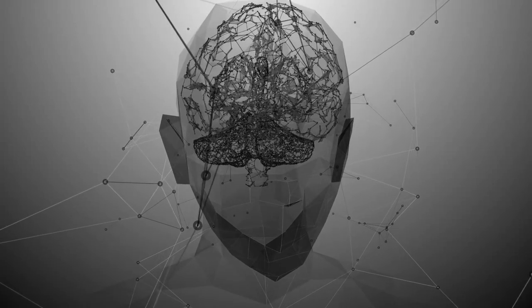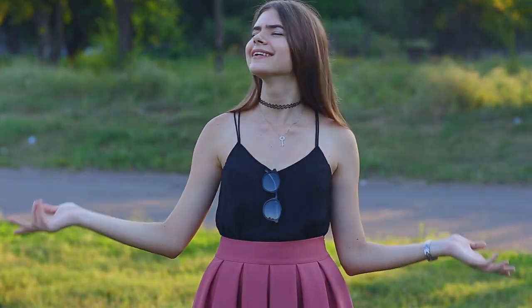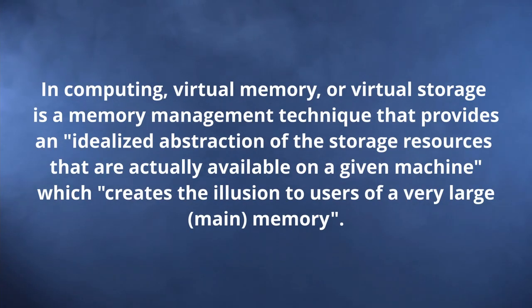Virtual memory is a term bandied around that everyone expects you to know. The best definition I've seen, which is still absolutely awful, is on Wikipedia. It says, "In computing, virtual memory, or virtual storage, is a memory management technique that provides an idealized abstraction of the storage resources that are actually available on a given machine, which creates the illusion to users of a very large main memory." And I know what you're thinking. What the fuck does idealized abstraction mean?